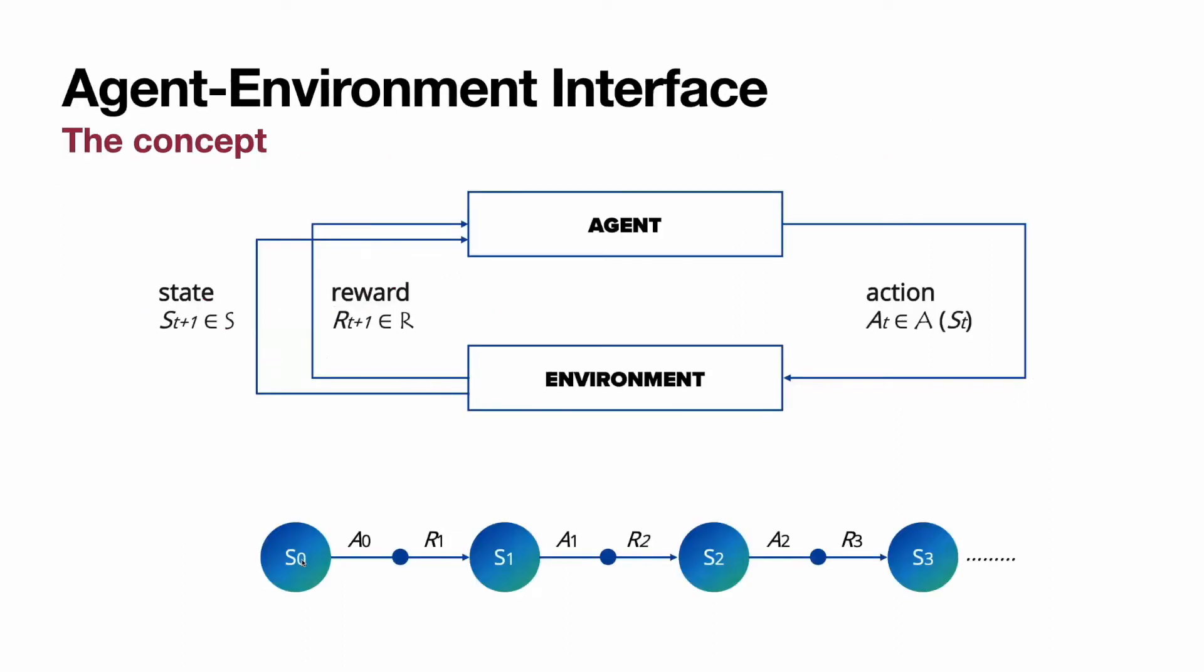If agent is in state S0 and the agent decided to take action A0, there is, for example, 90% chance that agent will end up in expected state S1. Otherwise, there is a 10% chance that agent will perform a random action appearing in some unexpected state different from S1.